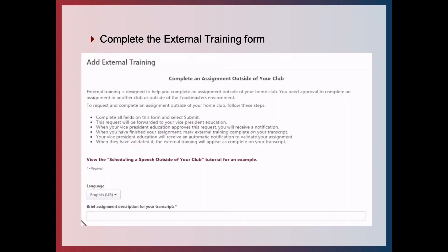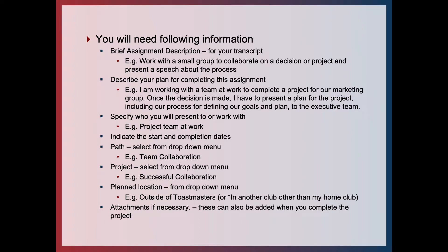This will open up the Add External Training form, where you complete details for an assignment outside of your club. You need to provide a brief assignment description, describe your plan for completing the assignment, specify who will be present or who you will work with on the project, indicate the start and completion dates, and select from the drop-downs which path and which project this is against.